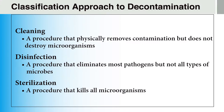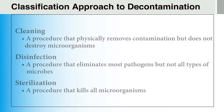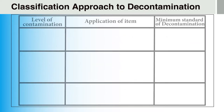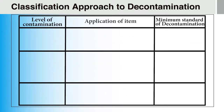As defined in the previous module, decontamination is the process of removing or destroying pathogenic contaminants and therefore preventing pathogens from spreading and causing illnesses. There are three levels of decontamination: cleaning, disinfection, and sterilization. The level of decontamination that must be used depends on the level of contamination. Based on the risk of infection, there are three levels of contamination: critical, semi-critical, and non-critical.